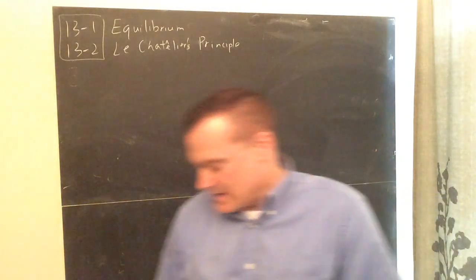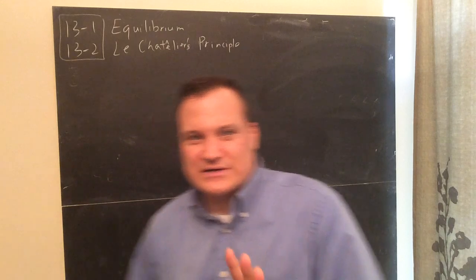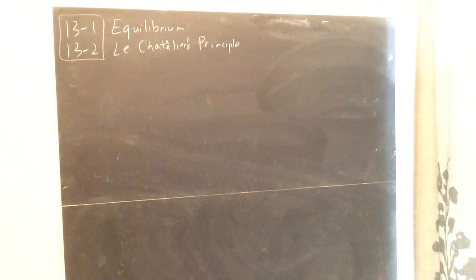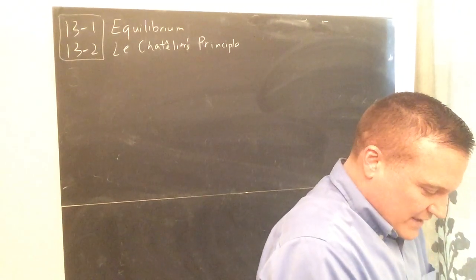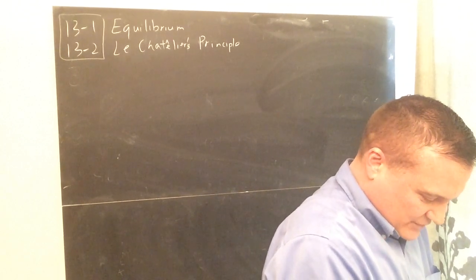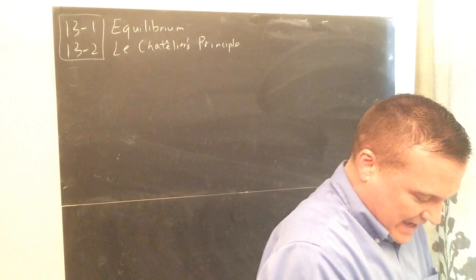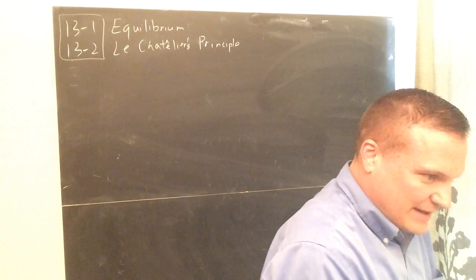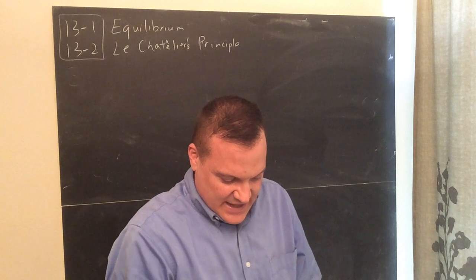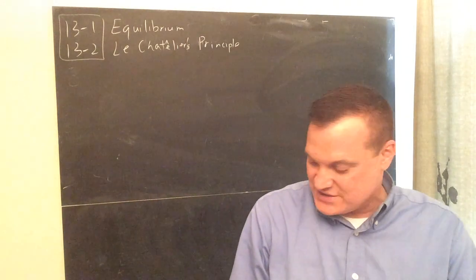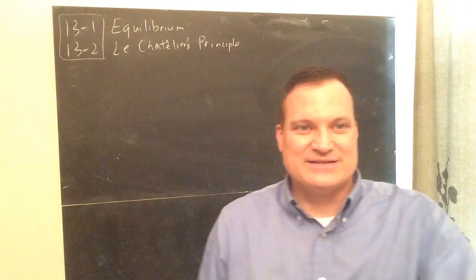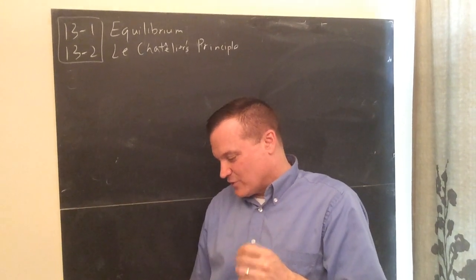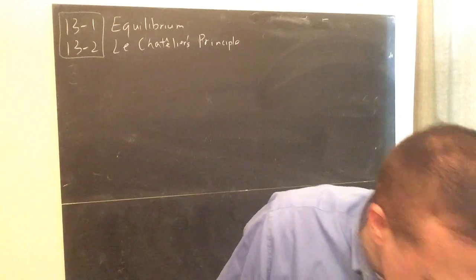Two scientists are credited with what's called the law of mass action. I thought I had it written somewhere — it is Cato Guldberg and Peter Waage. It's actually in your notes later on. So Waage and Guldberg — the law of mass action. Let me give you an example you might know or find pretty interesting.